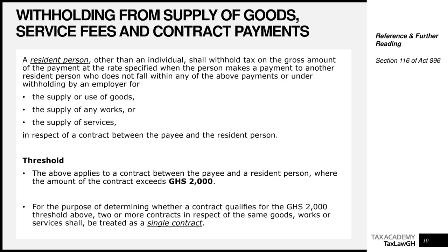To summarize the rates: when you withhold on goods to a resident person the rate is 3%. On works to a resident person the rate is 5%. On services to a resident person the rate is 7.5%.